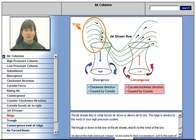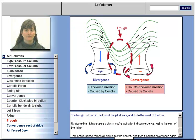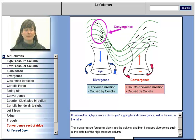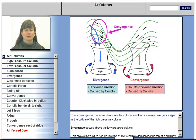The ridge is always to the west of your high pressure system. The trough is down in the low of the jet stream, and it is to the west of the low. Up above the high pressure column, you are going to find convergence, just to the east of the ridge. That convergence forces air down into the column, and then it causes divergence again at the bottom of the high pressure column.